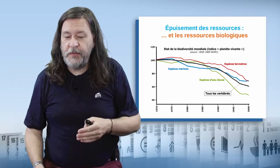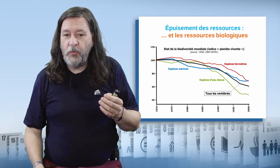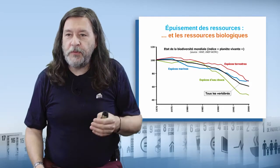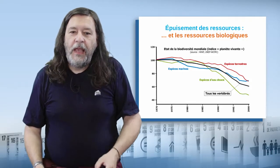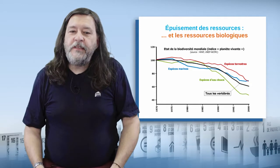Another important resource is biodiversity. You can see that there is an erosion of biodiversity for both terrestrial and marine ecosystems, which leads some to say that we have reached the sixth major extinction period because of this rapid erosion of biodiversity.